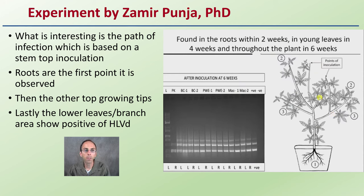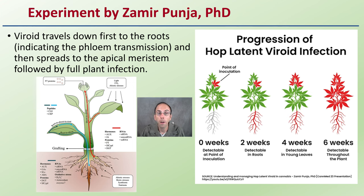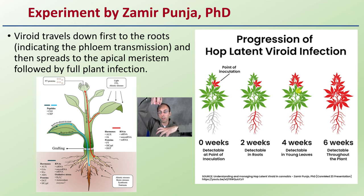What was interesting about this path of infection is that with a stem-top inoculation, the roots were actually the first point where it reached detectable levels. Then other top growing tips, and then the lower leaves or branches became positive for hop latent viroid in that order, within that two to six week timeframe. So roots may be a good area to sample. The viroid travels down first to the roots, confirming phloem transmission, then spreads to the apical meristem, followed by full plant infection.